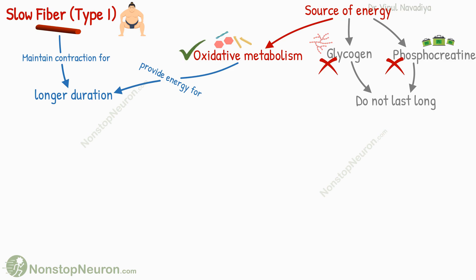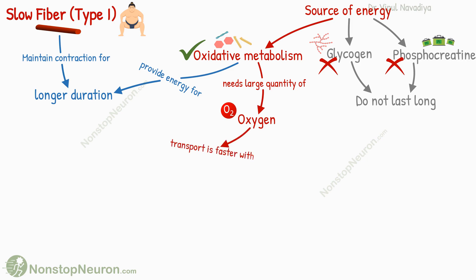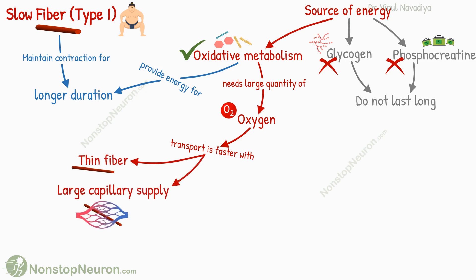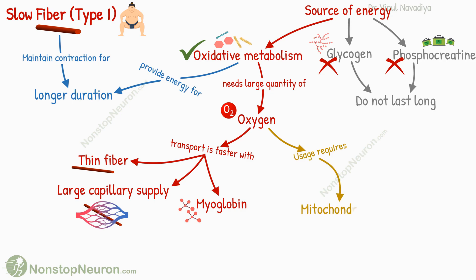Accordingly, slow fibers rely mostly on oxidative metabolism for energy. To perform this oxidative metabolism, the fibers need a large quantity of oxygen, so their structure helps them get oxygen faster. For example, they are thin and have a dense capillary network surrounding them. They also have a large quantity of oxygen-binding protein called myoglobin. All these facilitate the transport of oxygen, and to use it, they have a large number of mitochondria and oxidative enzymes.